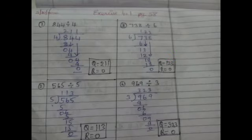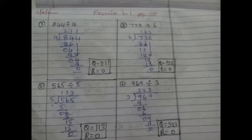Next, Exercise 4.1 on page number 58. As we covered in the warm-up section, we recalled division of a 2-digit number by a 1-digit number. Now in this chapter, we are going to see 3-digit and 4-digit division. Okay children, listen.